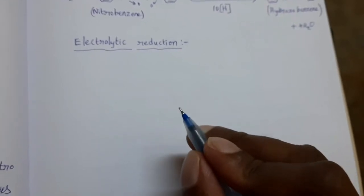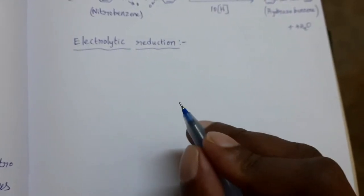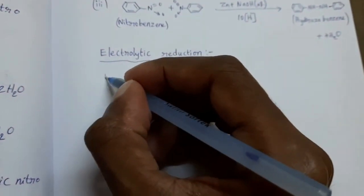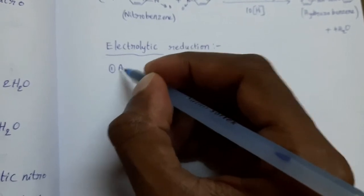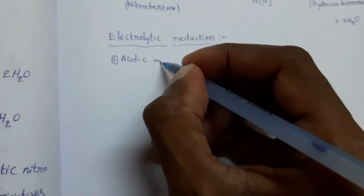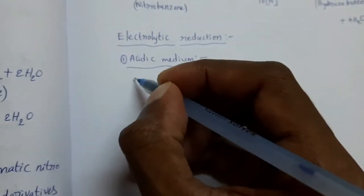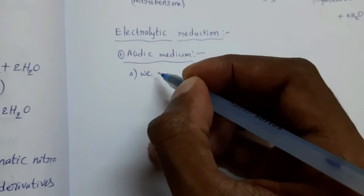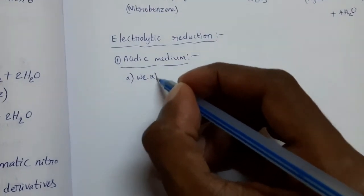Reduction takes place electrolytically in acidic medium and also in basic medium. First, see the acidic medium. In electrolytic reduction in acidic medium, there are two types: one is weakly acidic medium and one is strongly acidic medium.